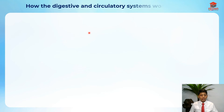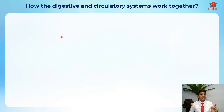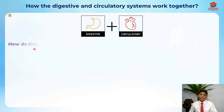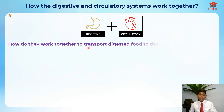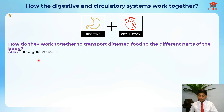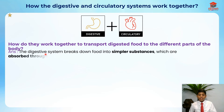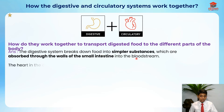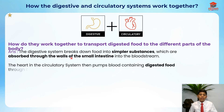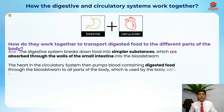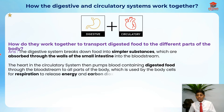We've talked about how all systems work together, but now let me show how particular systems work together using questions. This question is very important: how do the digestive and circulatory systems work together to transport digested food to different parts of the body? The answer is that the digestive system breaks down food into simpler substances, which are absorbed through the walls of the small intestine into the bloodstream.